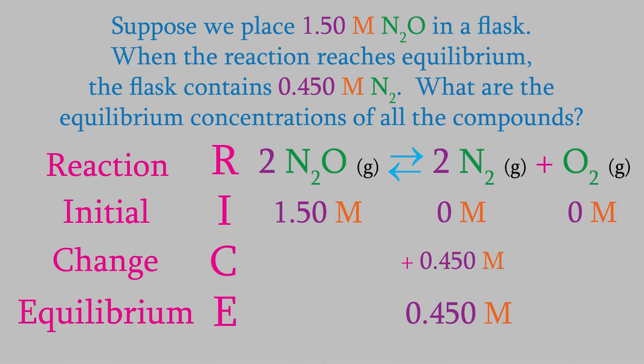What about the other two compounds? This is where the balanced reaction comes in. The ratio of the coefficients tells us the ratio between the concentration changes. For example, the coefficient on nitrogen is 2, but the coefficient on oxygen is only 1. That means that the concentration of oxygen goes up half as much as the nitrogen did. So, it goes up by 0.225 molar.